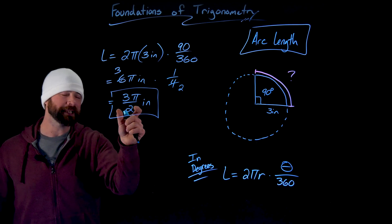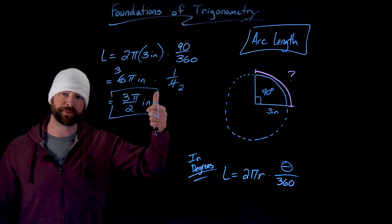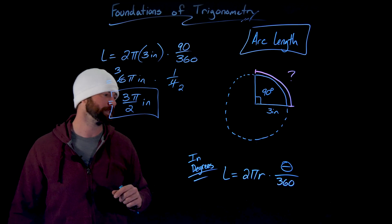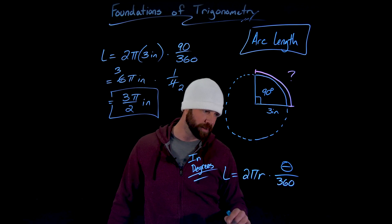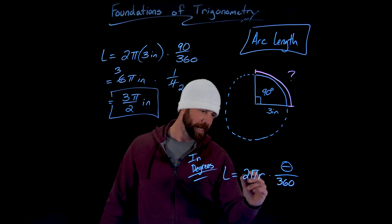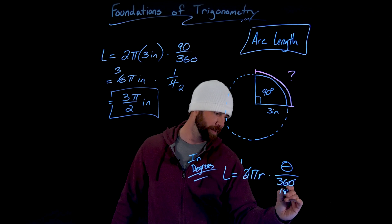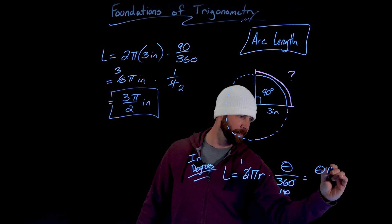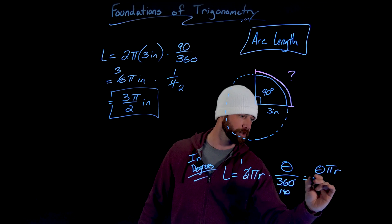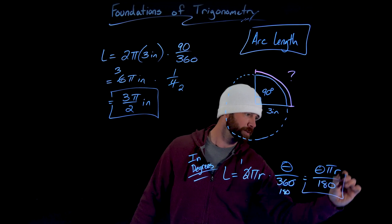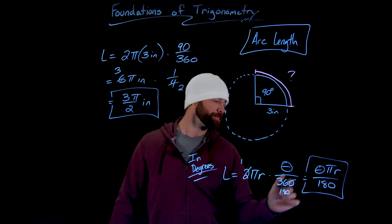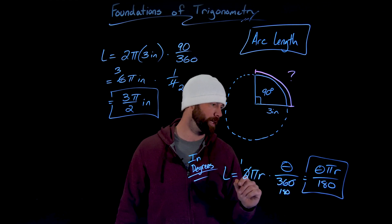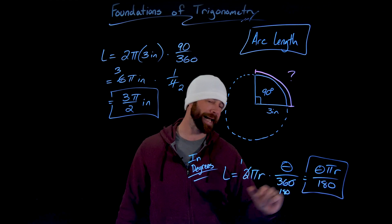I'm leaving this in exact form. I can multiply 3 times π and divide by 2 to get an approximation, but generally we prefer exact answers. Also, I can reduce this arc length formula for degrees: dividing gives us θ times π times r over 180. That's the formula to find the arc length of a circular arc when you know the radius and the interior angle in degrees.